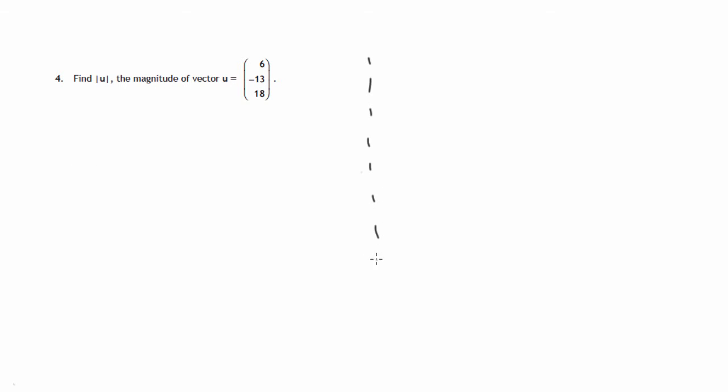The result we'll be using is that if you have a vector v in three dimensions with its three components a, b, and c, then the magnitude of that vector is the square root of the sum of each component squared.